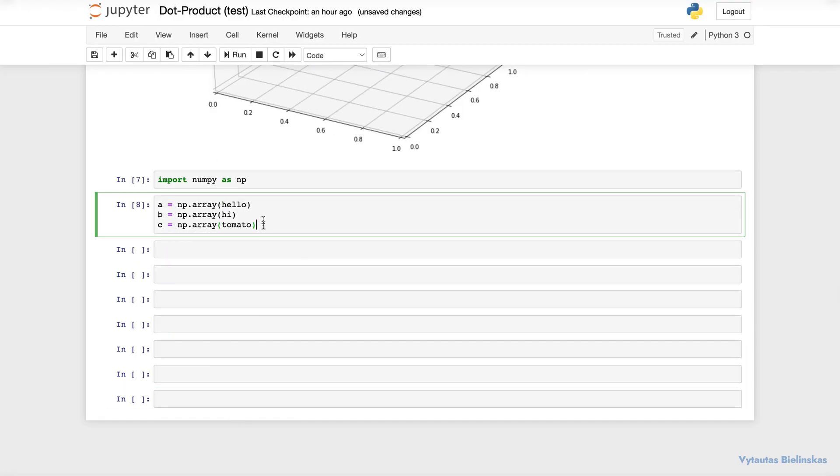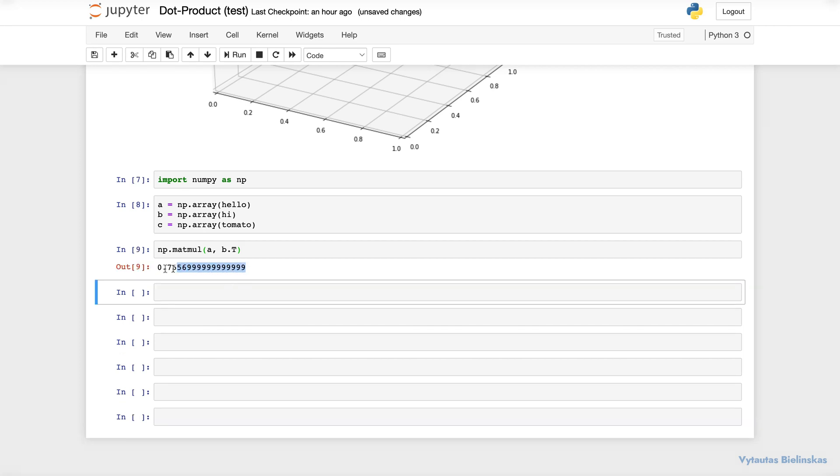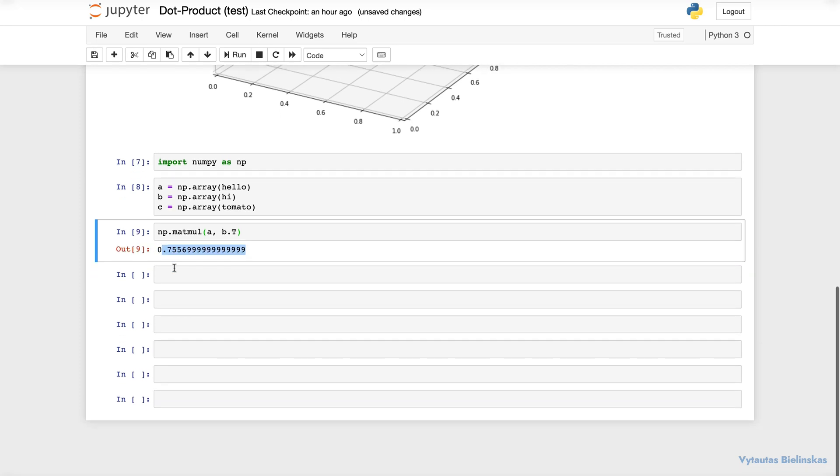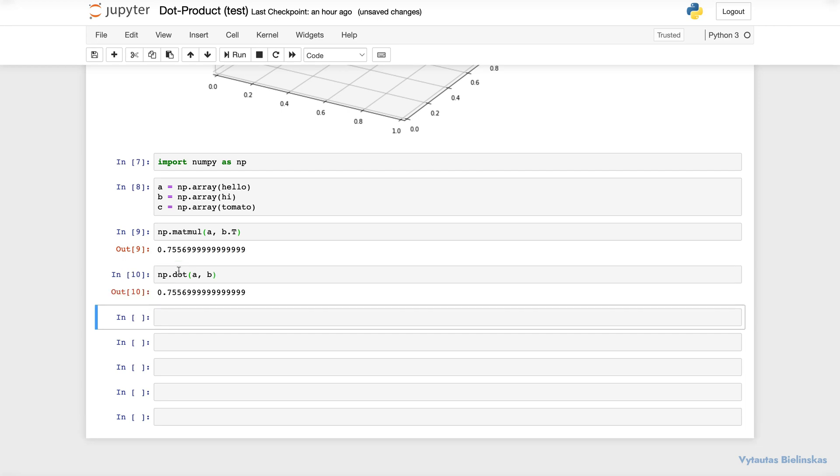Now back in python here, actually two operations we can do here. We can use numpy matrix multiplication which is matmul with a and b transposed. And here we got an alignment. Or we can also do numpy dot which is the product of a and b.